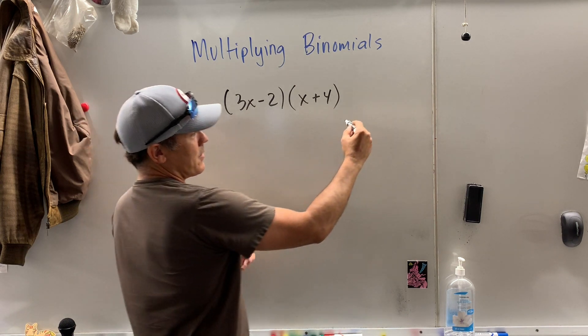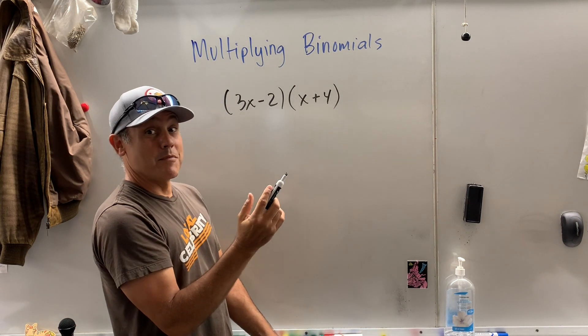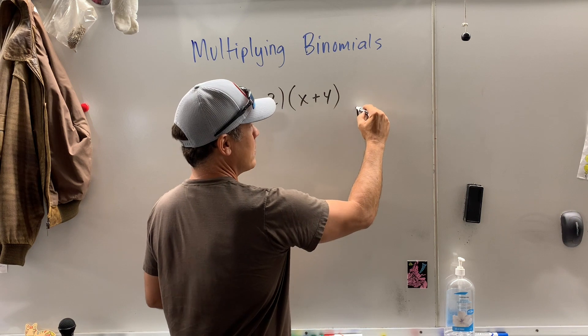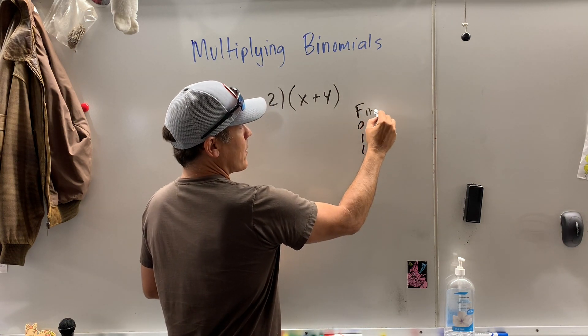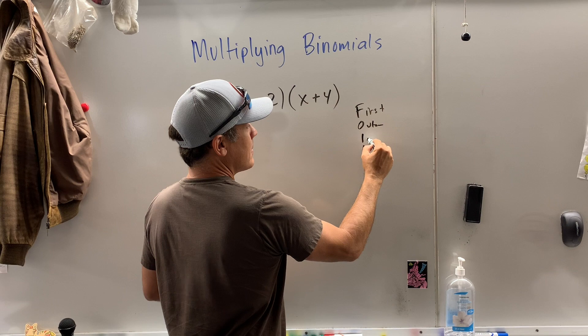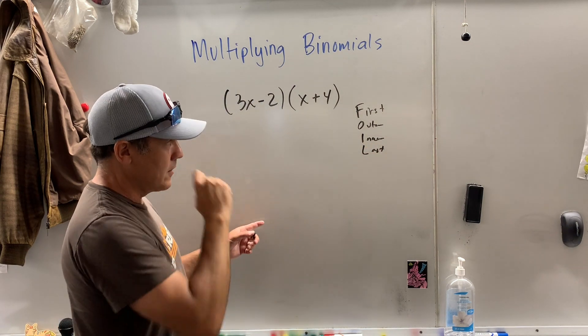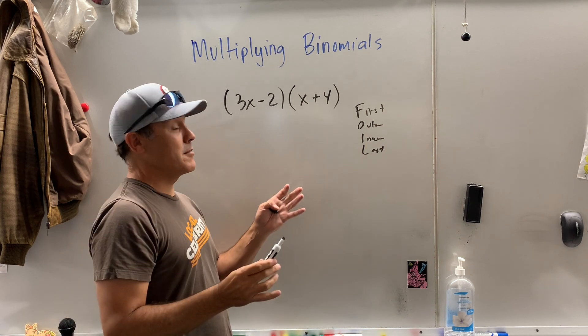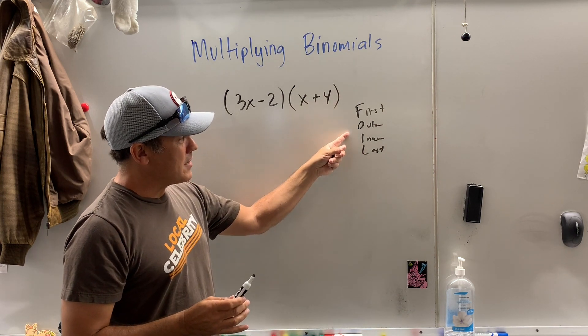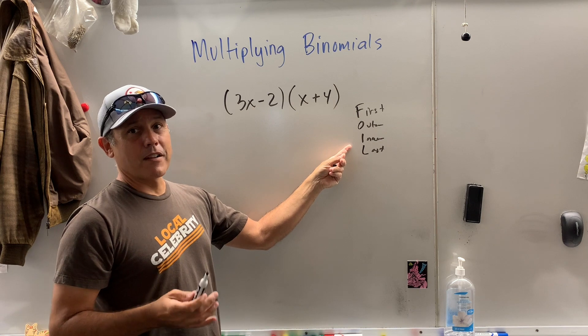You've heard of, well there is one four letter F word you can use in public education, it's called FOIL, okay? It's First Outer Inner Last. I've never been a big fan of FOIL and I haven't been a big fan of the area models either, but back in the day this is how we taught it, FOIL.